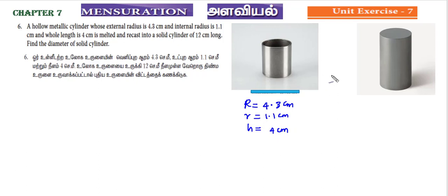Now we have a solid cylinder, and the solid cylinder length is 12 cm. So this height is 12 cm. This height is h2 and the height is h1. Find the diameter of the solid cylinder.